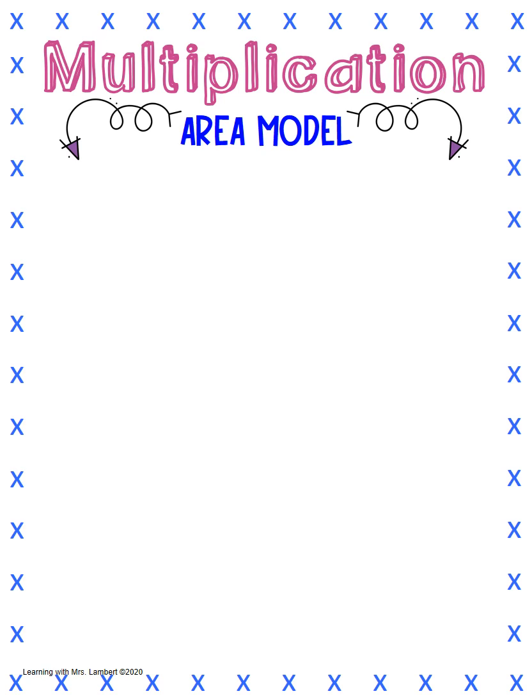Hi kids! Today we're going to use the area model to solve a couple multiplication problems. The first problem we're going to do is a three digit by a one digit: three times 251.